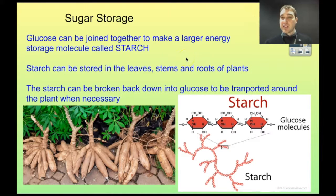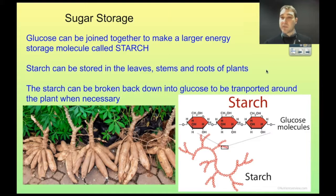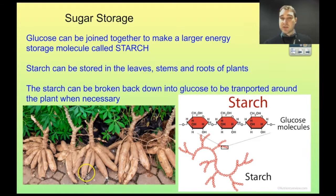We can join glucoses together to make a larger energy molecule called starch. In plants, they make starch; in animals, we make a different compound called glycogen. The starch is stored in leaves, stems, and roots, and then the plant can use the stored sugar later on. In times where there's lots of sugar being produced, you can store it. Then, in lean times like winter, you can burn off that sugar and transport it to other parts of the plant. Here we have some cassava roots — these are examples of roots where starch is being stored.